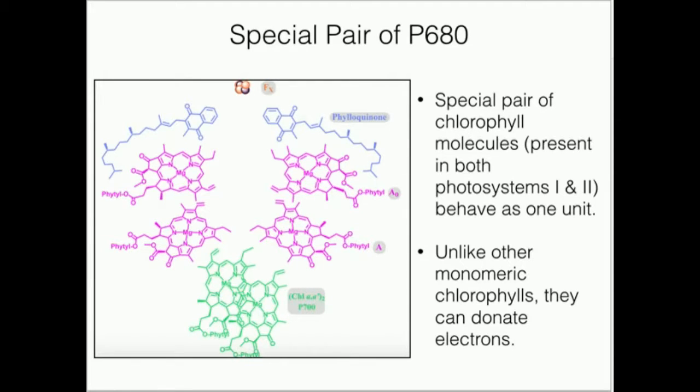What's meant to be shown down here is this is the special pair of chlorophyll molecules. Although this is P700, and for P680 these acceptors over here are a little bit different, but suffice to say, this special pair of chlorophyll molecules is going to behave as one unit. They're very close in proximity to one another, and it turns out that that close proximity allows them to have some very different properties that other chlorophyll molecules do not have.